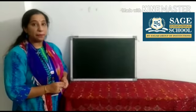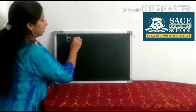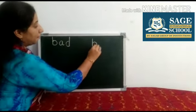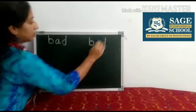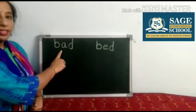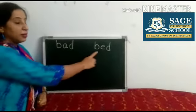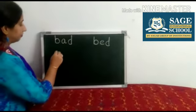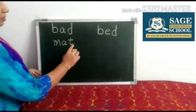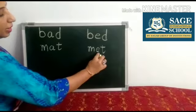Now children, I am giving you few examples of A sound and E sound. Look at the word. There is a difference between both the sounds. Look at my face. B, A, T — Bat. B, E, T — Bet. Bat, Bet. M, A, T — Mat. M, E, T — Met.